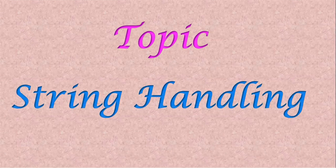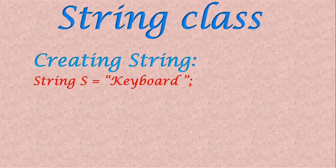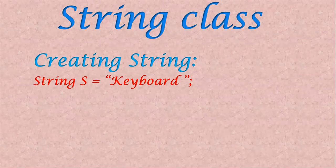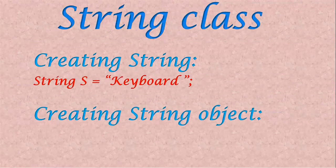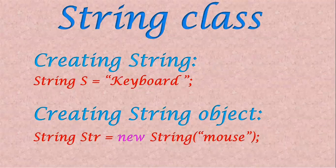Welcome back students. In this video lesson we are going to see string handling. Let us now see the String class. A string is a reference data type, so the variable — String s is equal to keyboard inside double quotation. This is the way of initializing the string variable. For a string object, String str — here str is the object name, that is a valid identifier — equal to new keyword, and then String of mouse given inside double quotation, where mouse is stored in the string object called str.